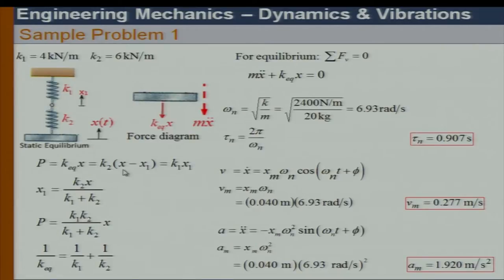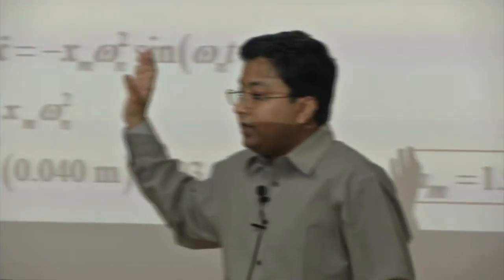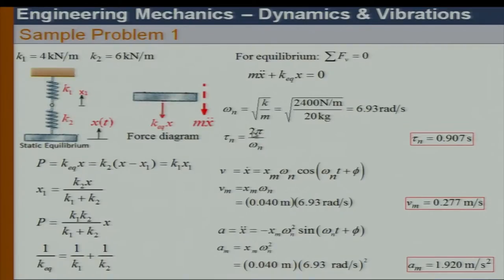From this, x and x₁ are properly connected. Once x₁ is solved and substituted back, we get K₁·K₂/(K₁ + K₂) multiplied by x, which is my K_equivalent for the series system. I can replace the two springs with one spring of equivalent stiffness K₁·K₂/(K₁ + K₂), and the procedure for finding maximum velocity and acceleration remains the same.